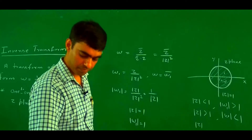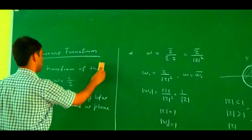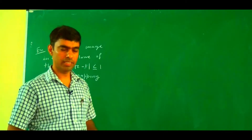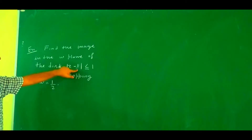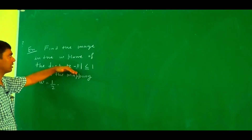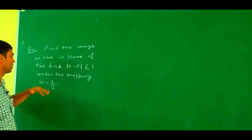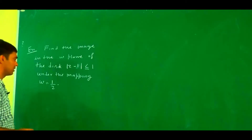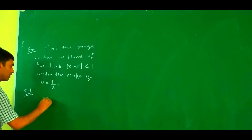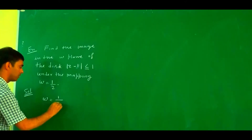This is one interpretation of the inverse transform. Now we take an example based on it, then define the bilinear transform. The problem: find the image in the w-plane of the disk |z − 1| ≤ 1 in the z-plane under the mapping w = 1/z.